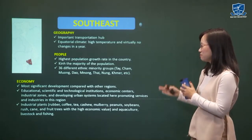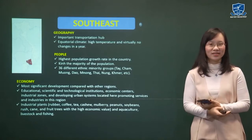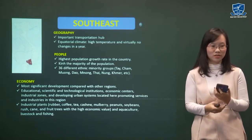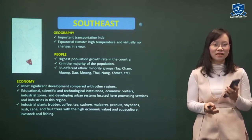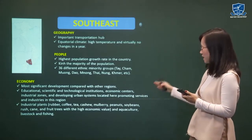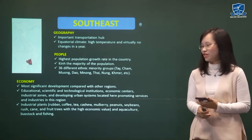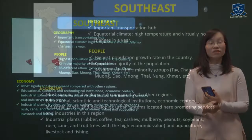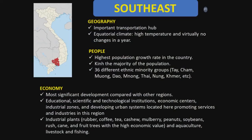In terms of economy, the Southeast has the most significant development compared to other regions in Vietnam. It has educational, scientific, and technological institutions, many economic centers, industrial zones, and a developing urban system. These promote the service industry. The region can also grow industrial crops like rubber and coffee in mountainous provinces. Overall, it is one of the most economically advantaged regions in Vietnam.